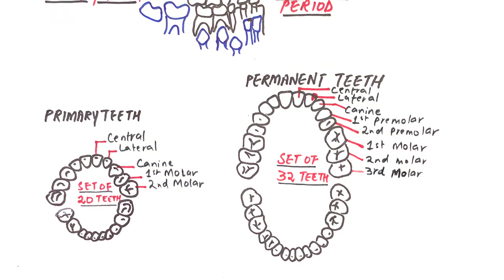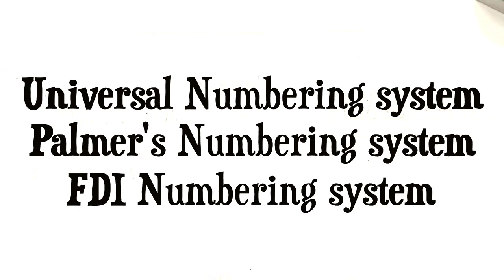Teeth are numbered for the purpose of easy communication amongst dental staff, so that they can refer to each tooth quickly, saving time and creating less confusion. There are three well-known tooth numbering systems: the universal numbering system, Palmer's numbering system, and the FDI tooth numbering system. Each system has its own unique advantages, so let's study each one in detail.